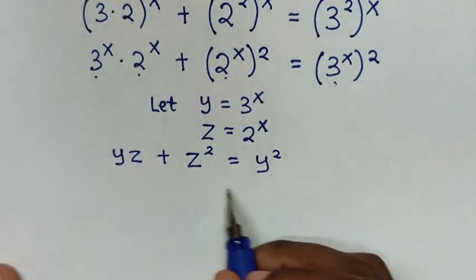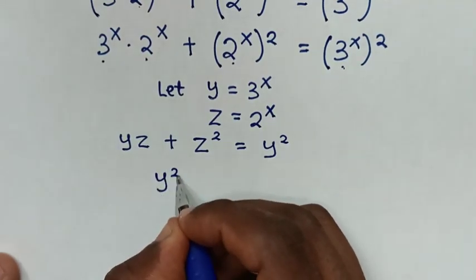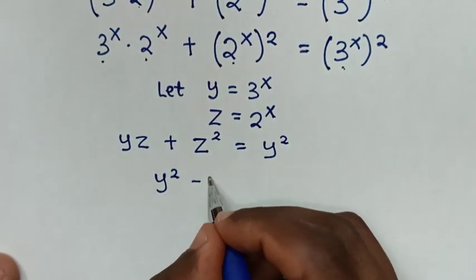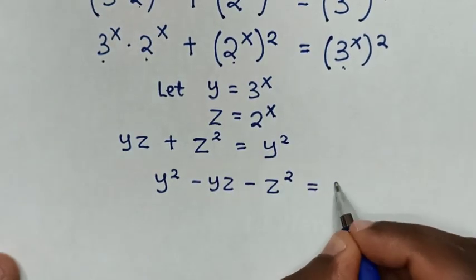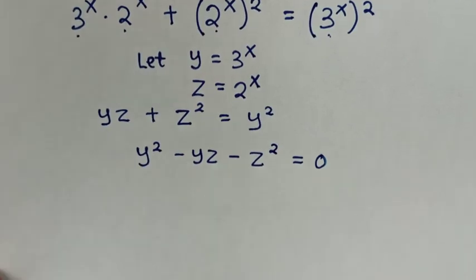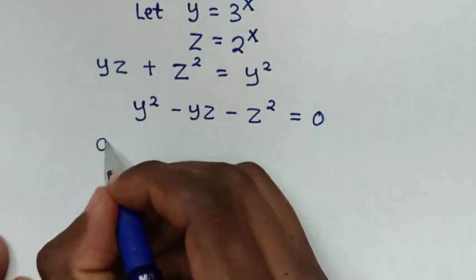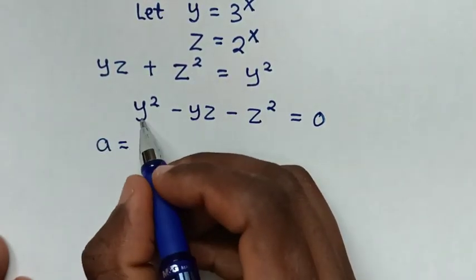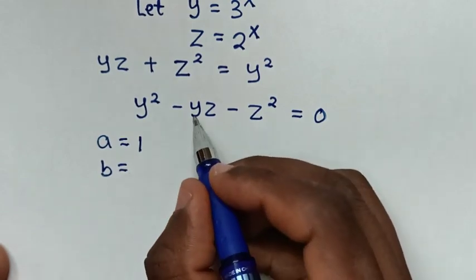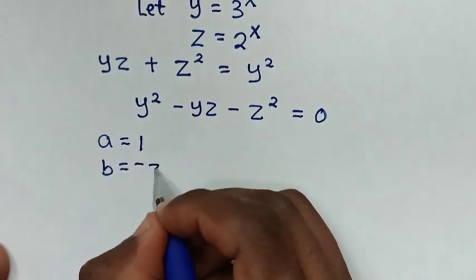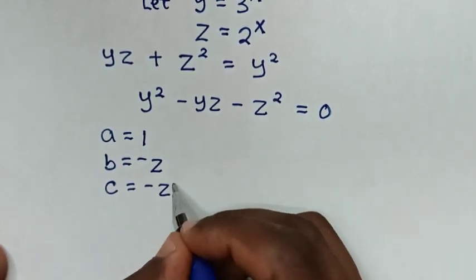In the next step we move all terms to one side, giving us y² − yz − z² = 0. We then solve this quadratic equation where a = 1 (coefficient of y²), b = −z (coefficient of y), and c = −z² (the constant term).